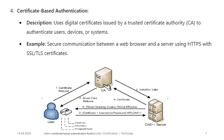Certificate-based authentication uses digital certificates issued by a trusted certificate authority, or CA, to authenticate users, devices, or systems. For example, secure communication between a web browser and a server using HTTPS with TLS certificates. When you go to Amazon.com to buy something, that's the kind of certification being performed — between your browser and the server at the Amazon store.